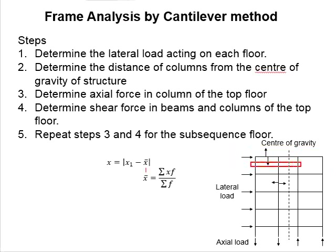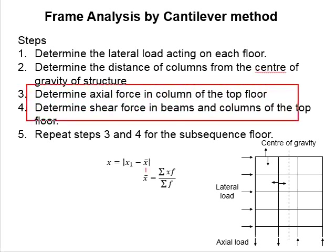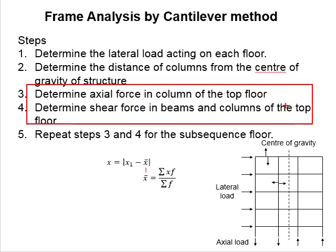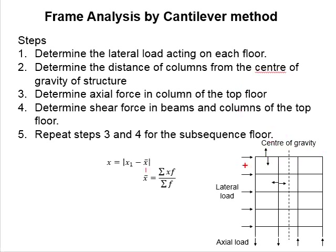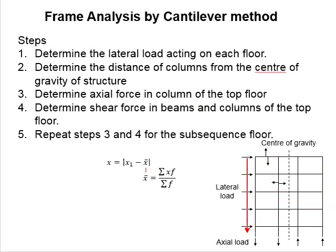Determine the axial force in each column. Based on the axial force obtained in each column, construct the free body diagram for each joint and determine the axial force in the beams and columns at each floor. The steps to determine the axial force in each floor of the columns and beams are repeated for the following floors. The axial force obtained from the upper floor will be brought forward to the following floor, and the same applies all the way down to the ground floor.